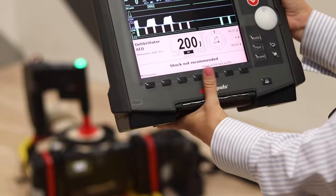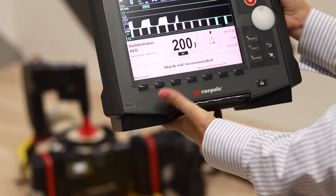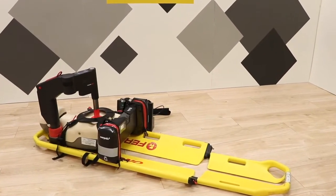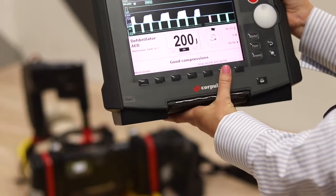The CorePulse CPR ensures fully automatic, fatigue-proof thorax compressions, and the compression depth, rate, and mode can be manually adjusted when needed.